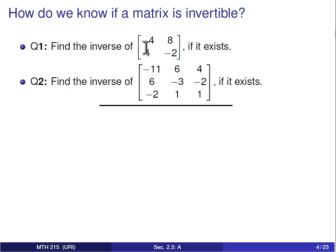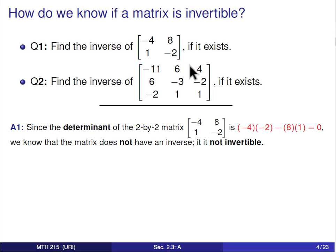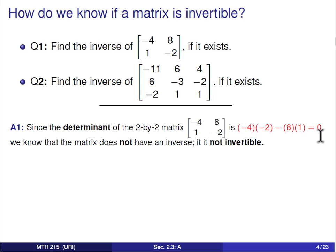For this first question, we're supposed to find the inverse of the matrix [−4, 8; 1, −2], if it exists. This is a 2×2 matrix, so we should know how to find the inverse. Remember, to find the inverse of a 2×2 matrix, you switch the diagonal entries, change the sign on the B and C entries, and divide by the determinant. The determinant of this matrix is (−4)(−2) − (8)(1), which gives us 8 − 8 = 0. That's a problem, because the determinant is in the denominator of our formula, and 1/0 is undefined. So this matrix does not have an inverse — it's not invertible.